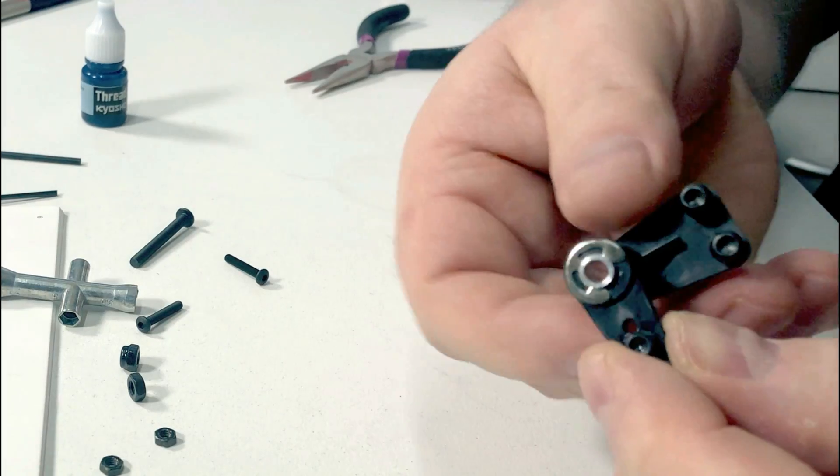And then you've got the front caster block. So you've got to thread lock that one in there and it's got to be sticking out 5.5mm. And we're pretty good there too. Alrighty, so now we can put the front end together.